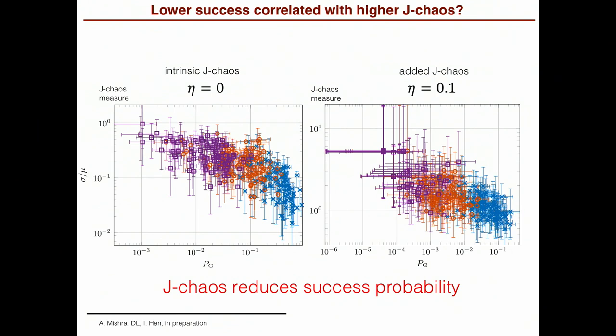Is lower success probability actually correlated with J-Chaos? And the answer is yes. This is J-Chaos as a function of success probability for all 300 instances at 0 added noise. And you see that the success probability is much lower as the J-Chaos measure is higher, right? And at added noise, 0.1, the effect is even stronger, all right? So yes, J-Chaos exists and reduces the success probability.